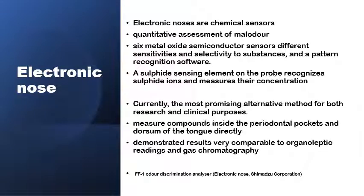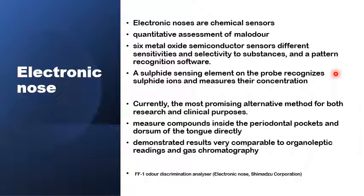Electronic noses are chemical sensors. The equipment has six metal oxide semiconductor sensors with different sensitivity and selectivity to various compounds in the expired air. They can sense and quantify the three different volatile sulfur compounds individually. They can be used selectively in areas like the back of the tongue or directly in the gingival or periodontal pockets to measure localized areas, and the results are fairly accurate.